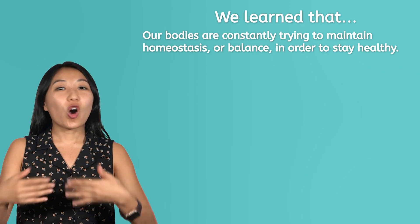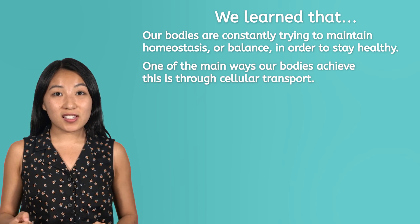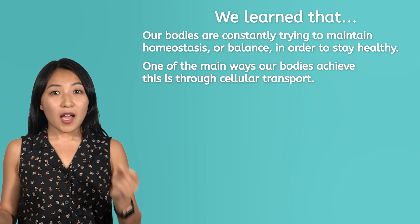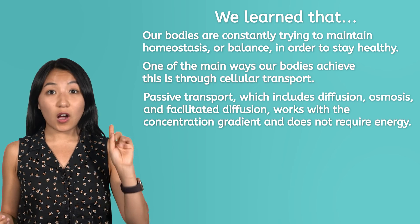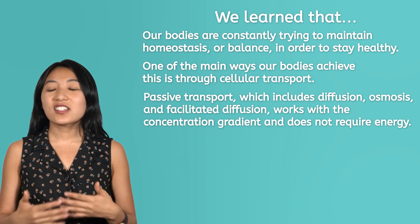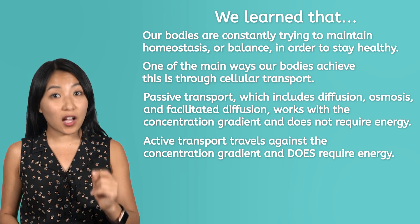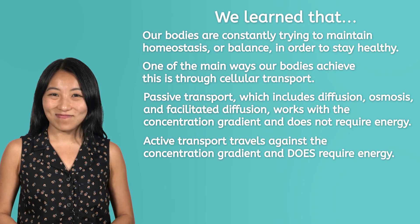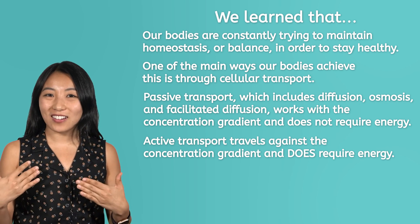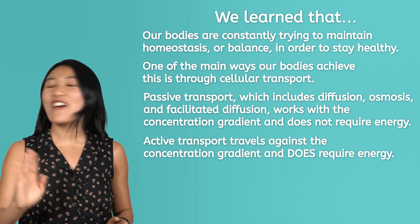We have now covered the basics of cellular transport. We learned that our bodies are constantly trying to maintain homeostasis, or balance, in order to stay healthy. One of the main ways our body achieves this is through cellular transport. Passive transport — which includes diffusion, osmosis, and facilitated diffusion — works with the concentration gradient and does not require energy. Active transport travels against the concentration gradient and does require energy. Until next time, fellow biologists, I'm Caroline. And remember, life is full of wonders, so keep learning and don't ever stop wondering.